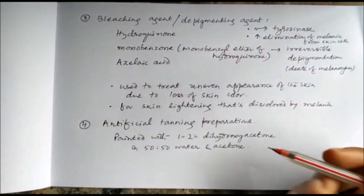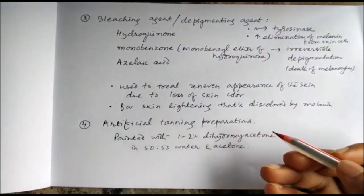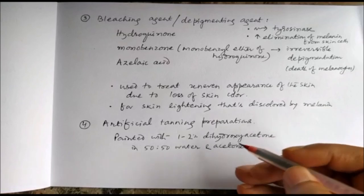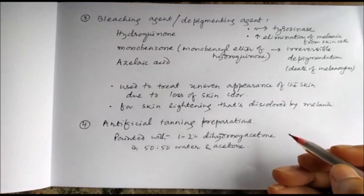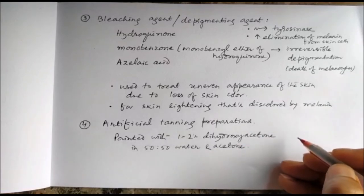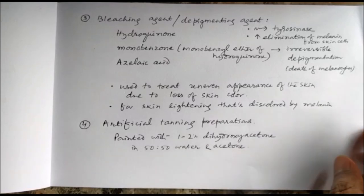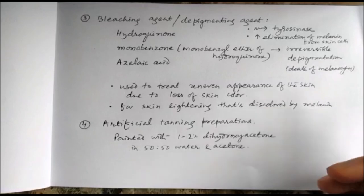In some patients there can be use of artificial tanning preparations. They can be painted with one to two percent of dihydroxyacetone in 50% water and acetone. These are all about treatment of vitiligo. Thank you.